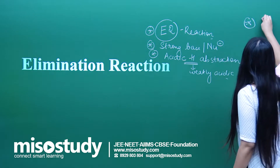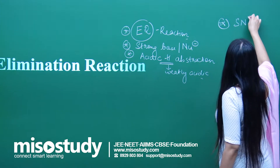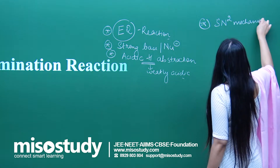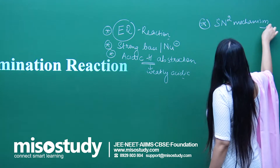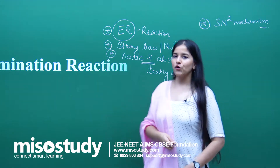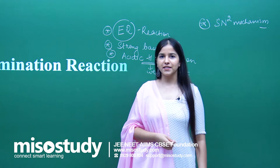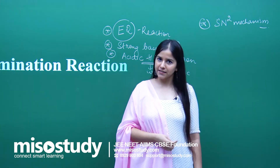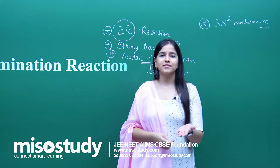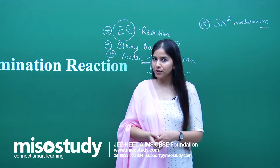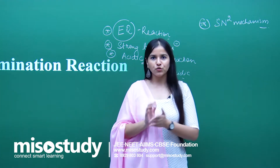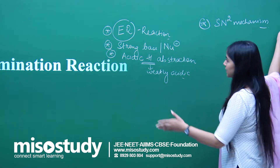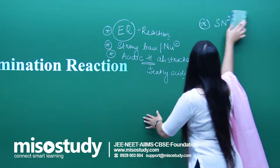The fourth point: beta elimination occurs via an SN2 mechanism. That means in just one transition state, the fate of the reaction and the fate of the product is decided. That is what beta elimination is. The Zaitsev rule plays a very important role in the product formation.